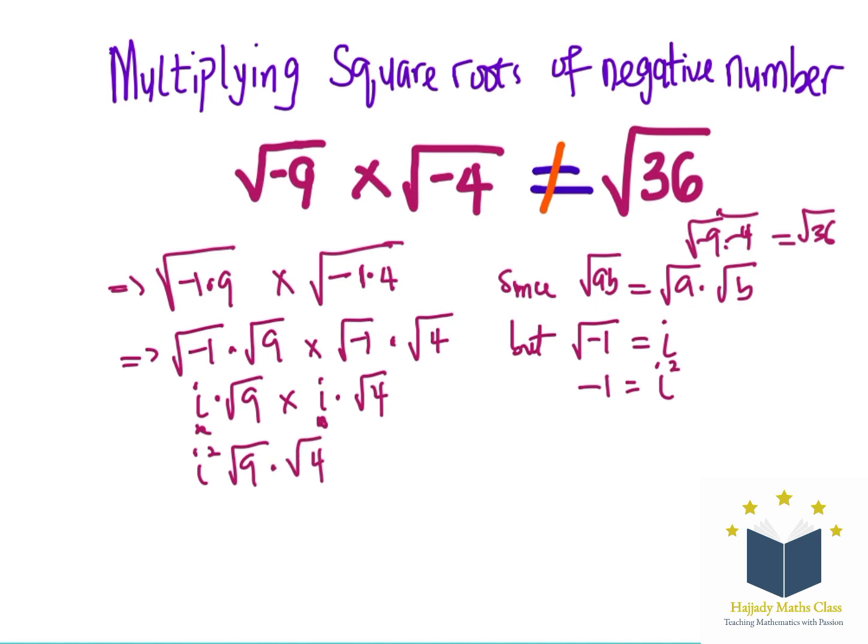So, my i squared is going to be negative 1 multiplied by 9 times 4. So, with this, I'm going to have negative roots 36.